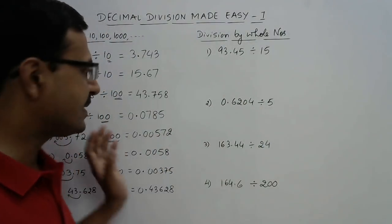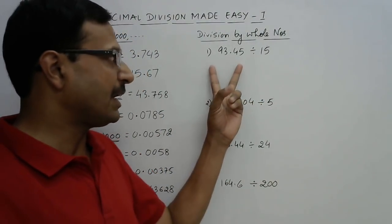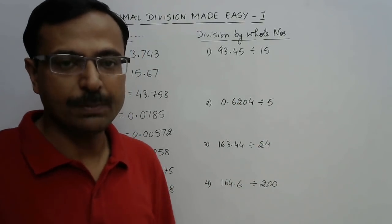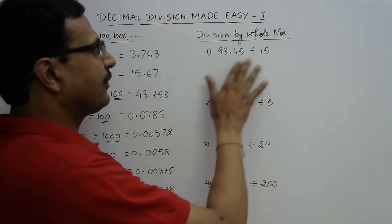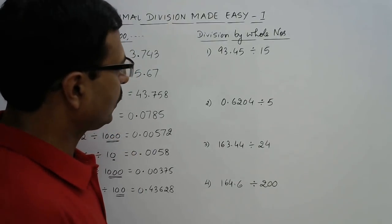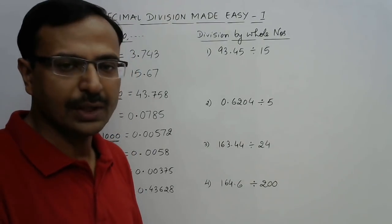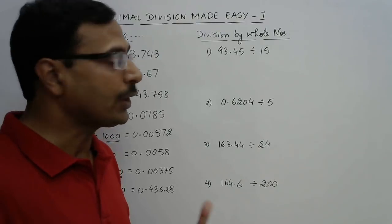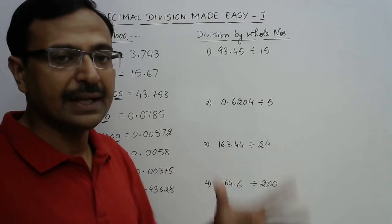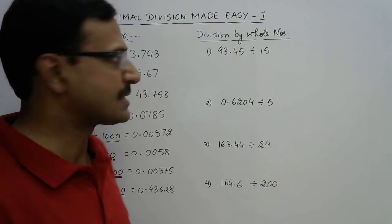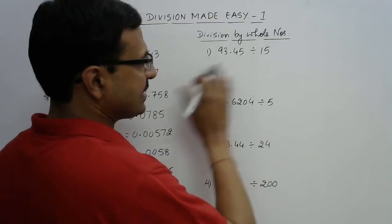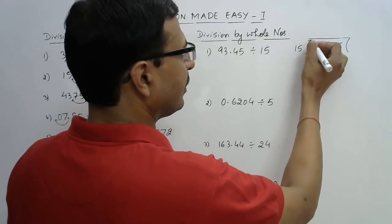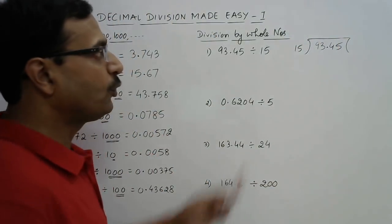Now let's see how we can apply this to divide decimal numbers by whole numbers — this is very interesting and crucial for the subsequent parts of this series. For example, 93.45 is to be divided by 15. For carrying out this division, the traditional division method applies directly. When the divisor is a perfect whole number, traditional division is the easiest. Write 93.45 as the dividend and start dividing by 15, considering the number before the decimal first.